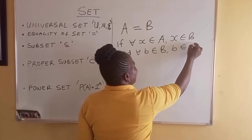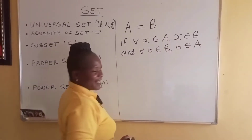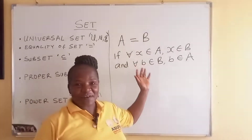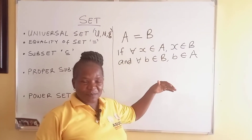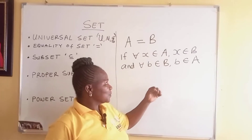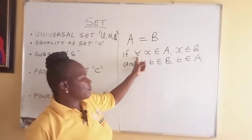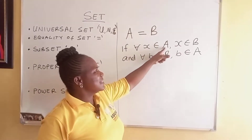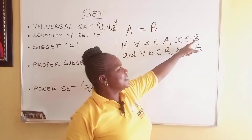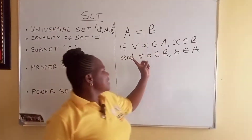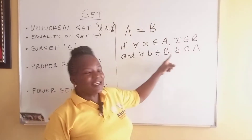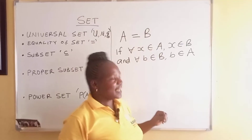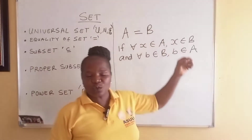And every element in B is also in A. Don't be afraid of what I've written on the board — it's very simple. This symbol means 'for all,' that is, every element in A is in B, and every element in B is in A. When such happens, we say that A is equal to B.